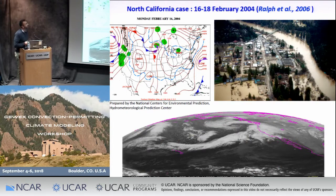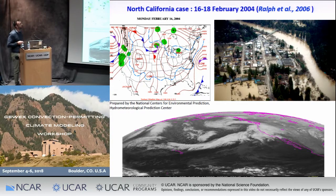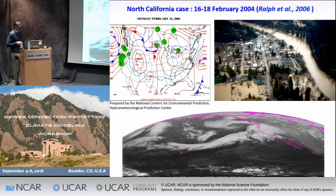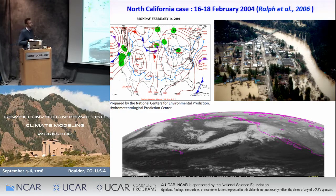The first case I'm going to present is the North California case, which happened between 6 and 8 February 2004. This event was characterized by a storm which struck North California and determined heavy precipitation in the coastal area. This event fed the runoff of the Russian River, which flooded the Guerneville area. Here we have a picture of this flood, and here we have a satellite image of the large-scale forcing which drove this event, represented by an atmospheric river, which is usually associated with this kind of event in this area.